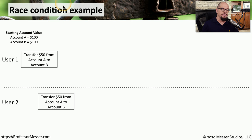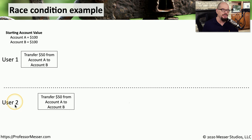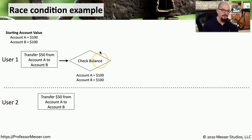Let's look at a race condition example. This is one where we're going to take money in one account and transfer it to another account. There are two starting accounts, account A and account B, both starting with $100. We also have user 1 and user 2, who will both be performing these transactions at close to the same time. User 1 performs a check balance to see the current balance in both accounts.